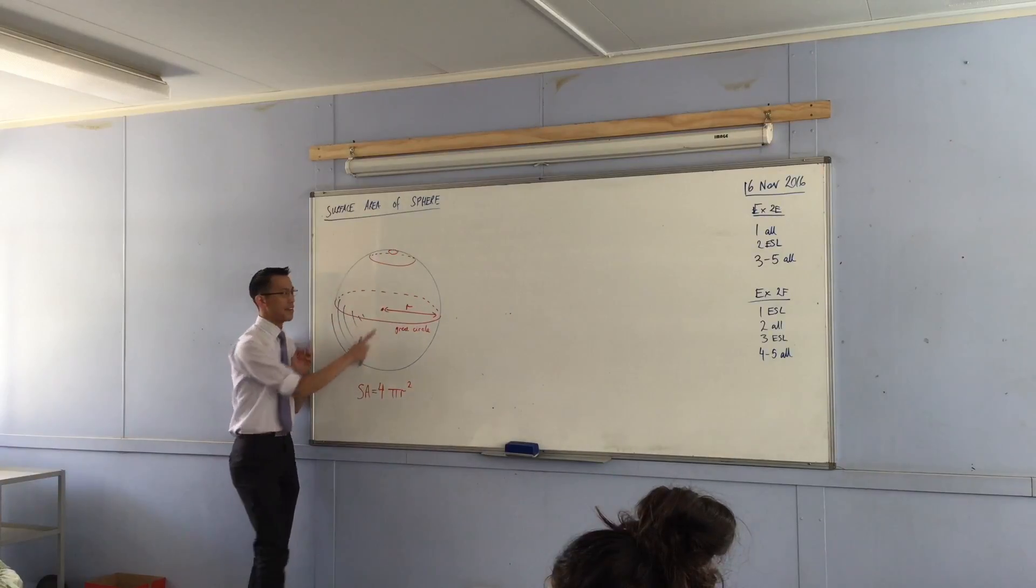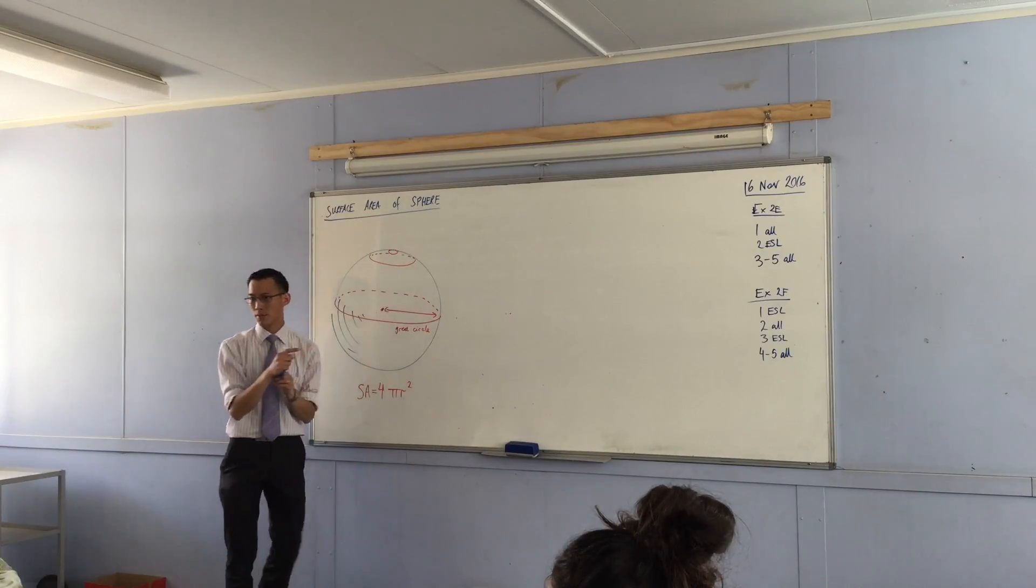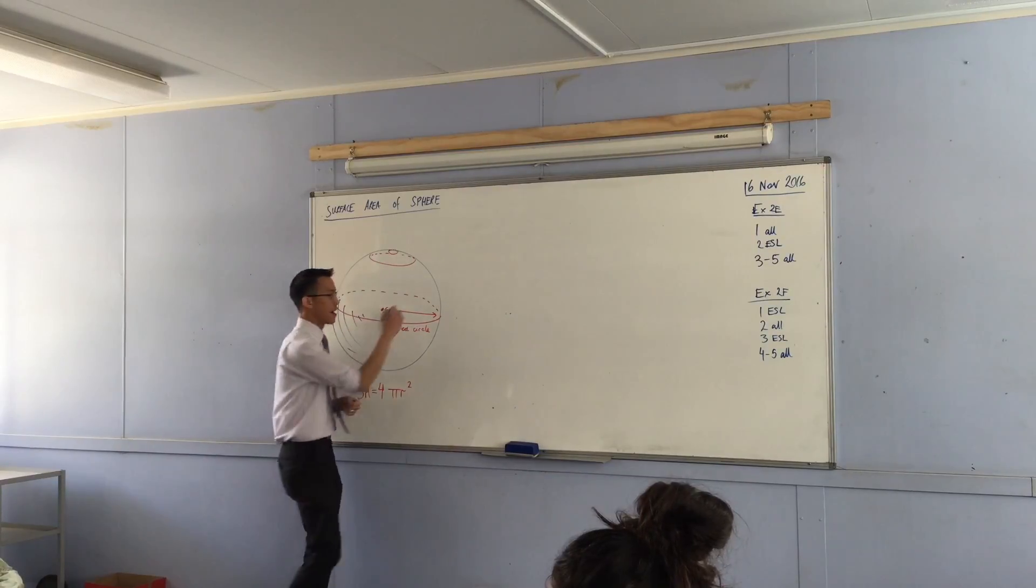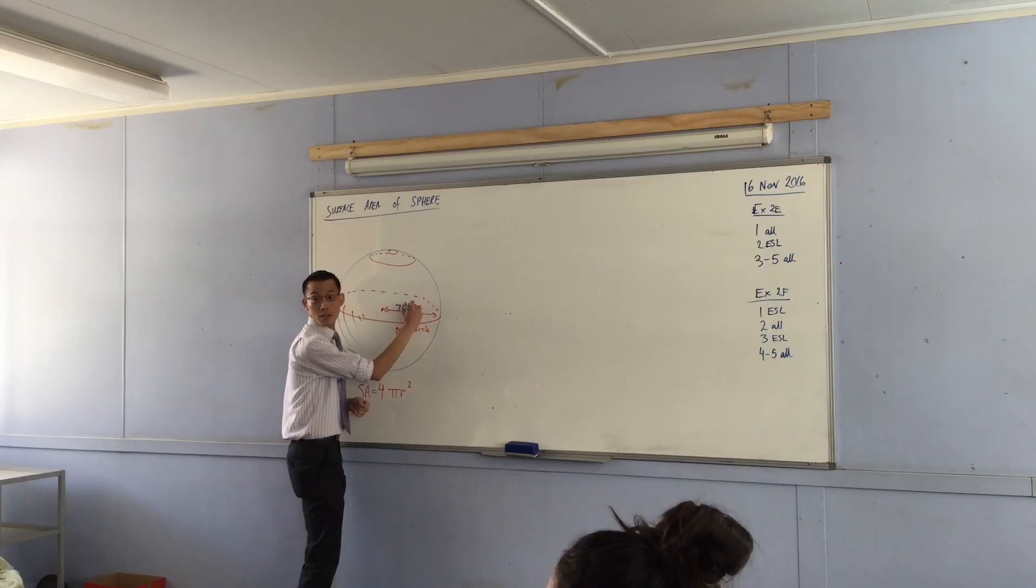They talk about a sphere and give you some dimensions for its radius. What's the radius of the sphere they're talking about? 7.5 centimeters.